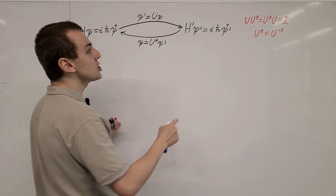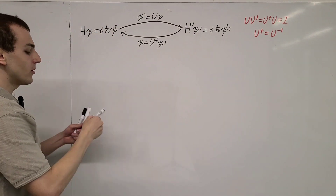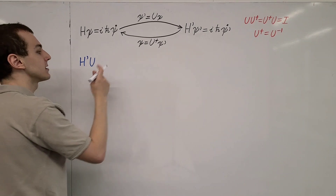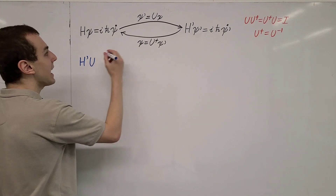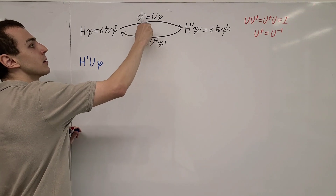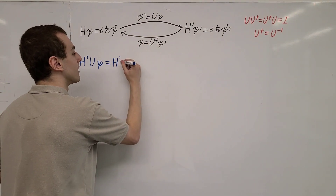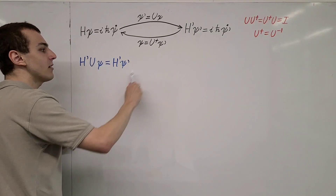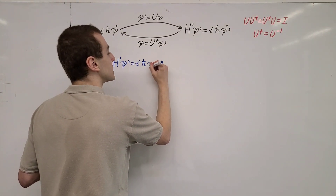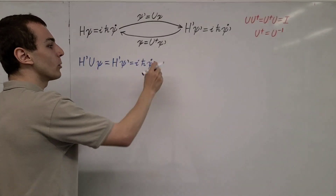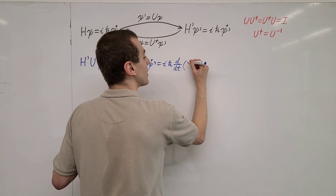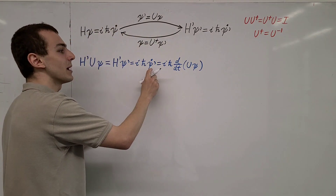Let's derive a relationship between H' and H. First, we write down H' followed by U, the unitary operator, and act on psi, the state. We can group U*psi together, which is defined to be psi'. So this is the same as H' psi'. By the Schrödinger equation, this is equivalent to i*h-bar times psi'-dot. We can unpack psi' and rewrite this as i*h-bar times the time derivative of U*psi.